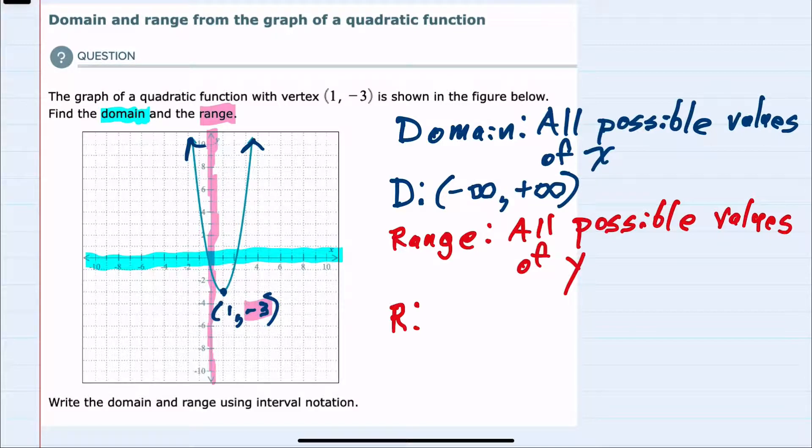So the smallest y value is negative three, and that's inclusive because it does exist where y equals negative three, and it continues to go up from there.